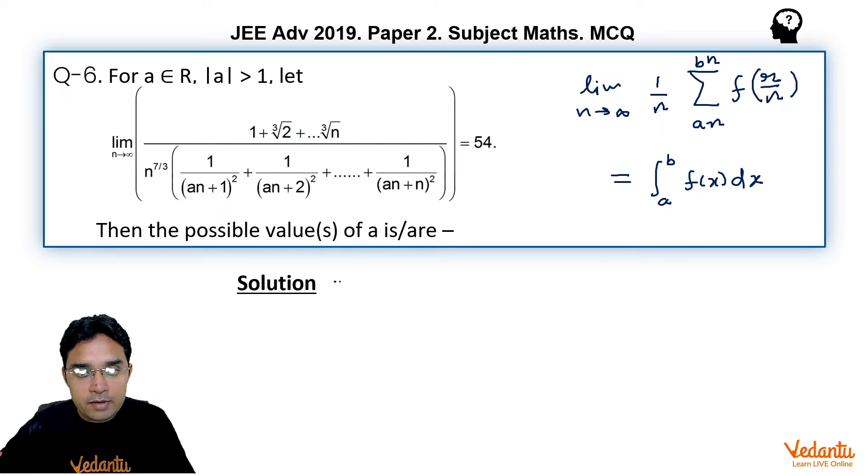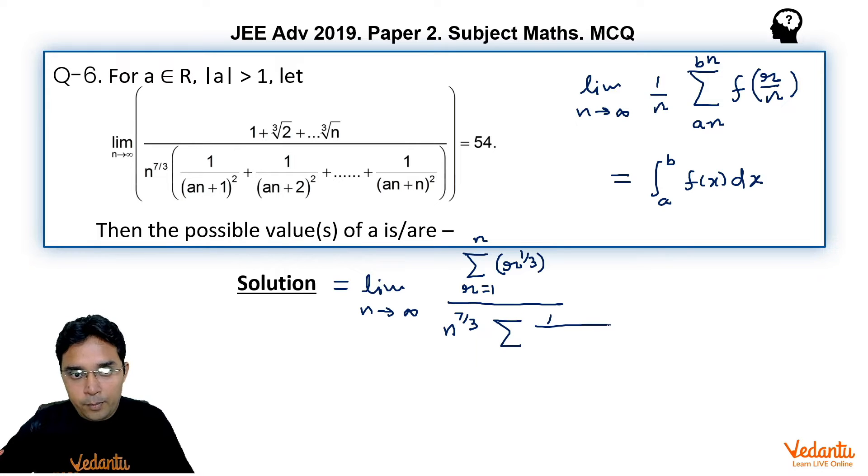Now how to use this question? We can write this given thing as limit n approaches to infinity sigma of r raised to the power 1/3 in numerator where r is varying from 1 to n. Now, if I simplify these terms, we can write them as in the numerator 1 upon n sigma r upon n whole raised to the power 7 upon 3 then sigma 1 upon (a·n + r) whole square and here also r is varying from 1 till n.